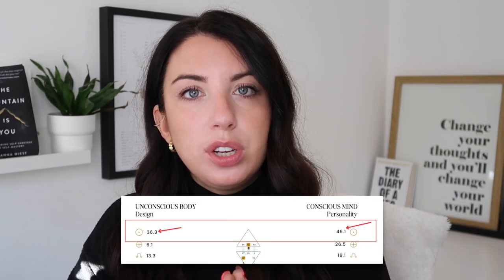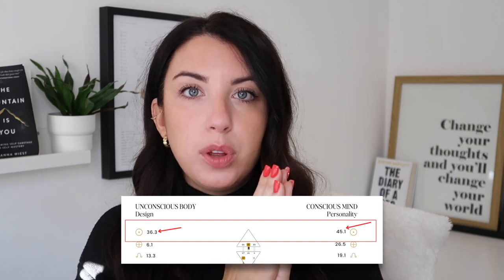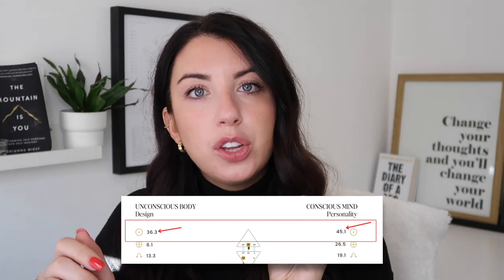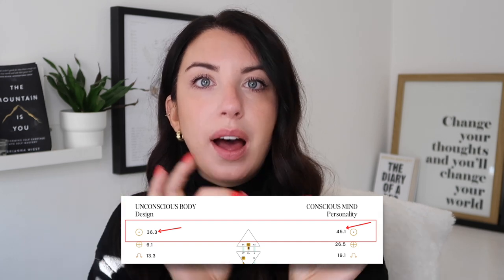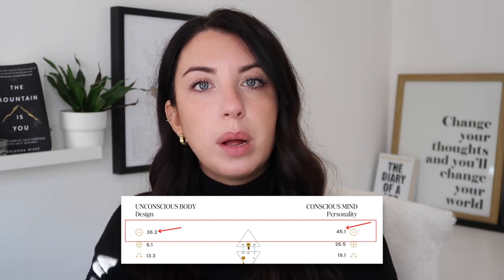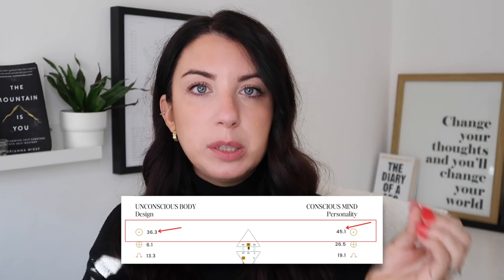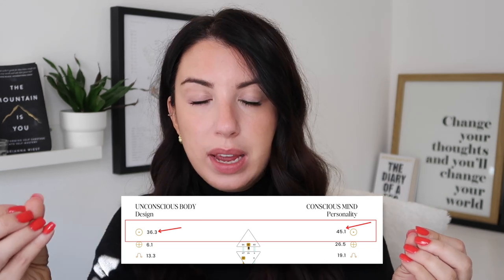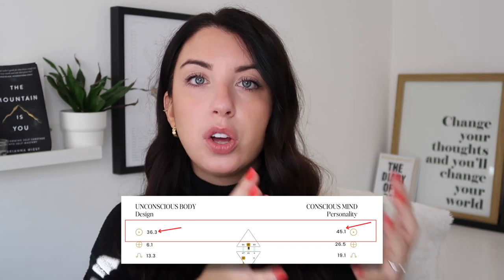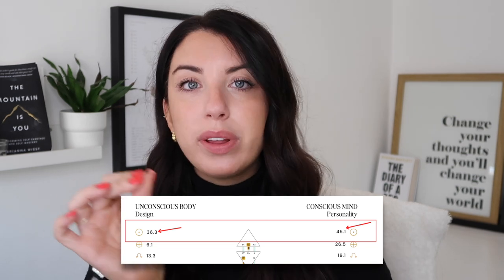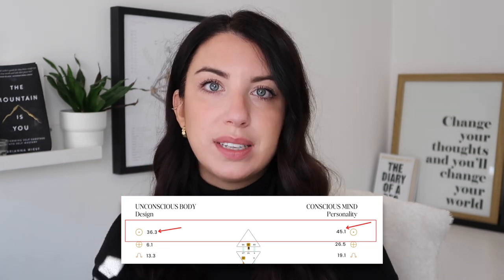If you're interested in understanding where in your body graph you can find your profile, what you want to look at is your gate in both your conscious and unconscious sun, and in particular the numbers after the decimal point. As shown here, this person is a 1-3, because we can see point 1 in the conscious sun gate and point 3 in the unconscious sun gate.